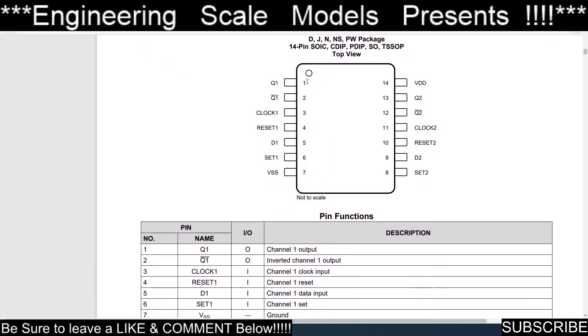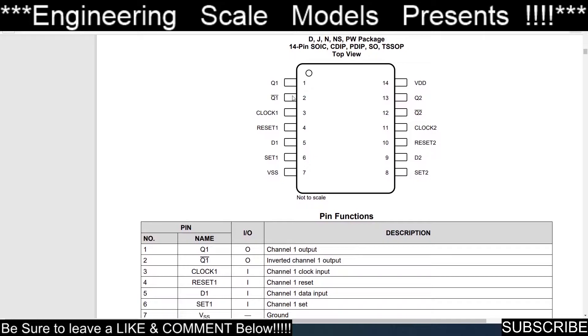If we come down here to the pin output, you got pin one up here. That is your Q1 and the inverse of Q1, your clock one, your reset, your D1, your set one, and you have your ground. Pin 14 is your 5 volts.